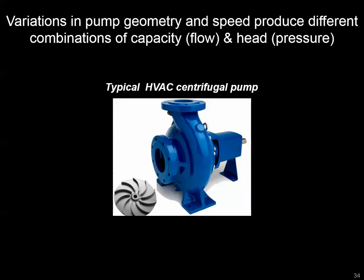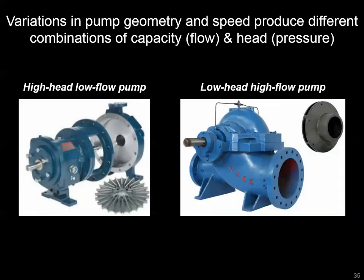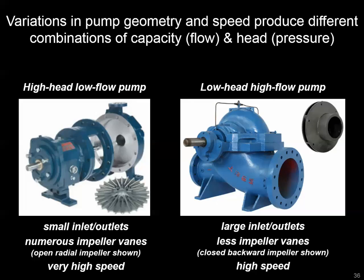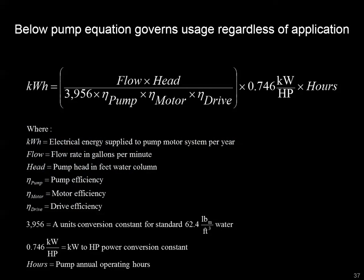To give examples of flow and head combinations, a typical hydronic pump falls in a certain range, but there are also extreme high-head, low-head, high-flow, and low-flow applications. You can tell from the shape and size of the impeller and the size of the inlet and outlet pipe flanges how those are accomplished. With the flow and head combination, along with efficiency at different operating points and hours of operation, we can determine the pump's kWh — and that will be the subject of the next video.